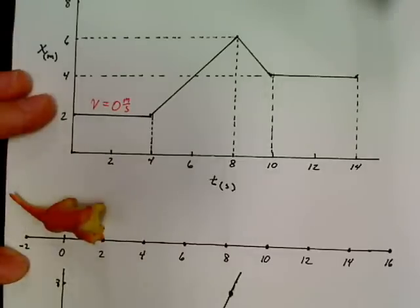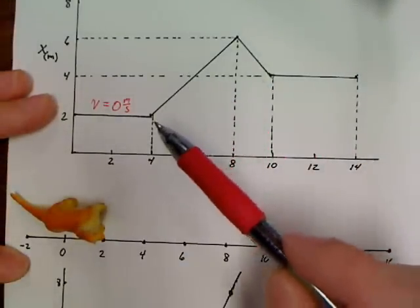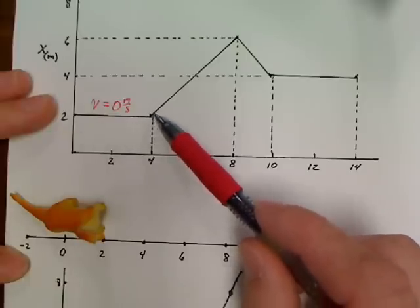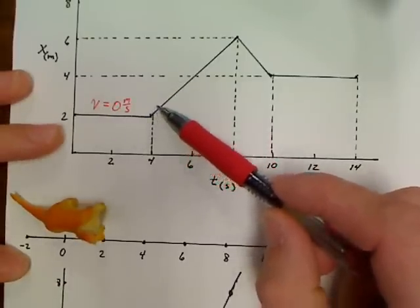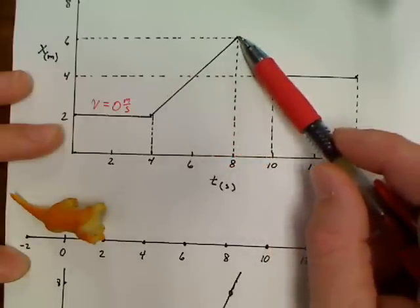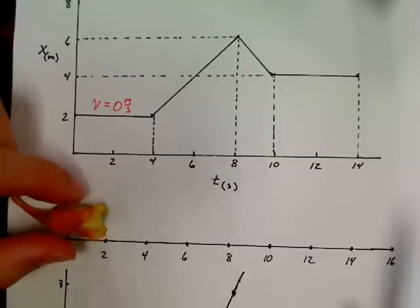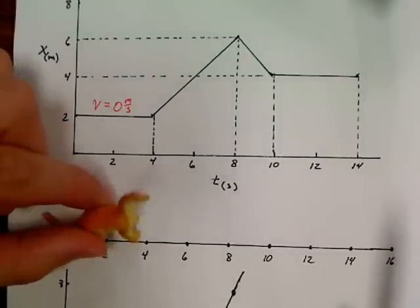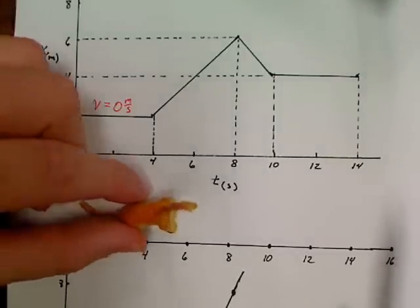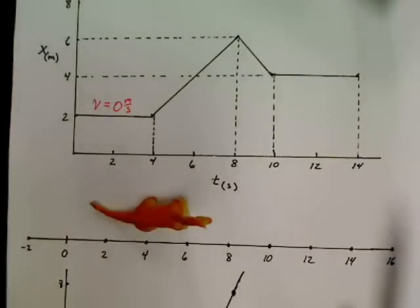Now take a look at what happens. After 4 seconds, the dinosaur begins to move. He moves from the 2-meter position to the 6-meter position. So after 4 seconds elapsed, the dinosaur begins to move, and at the 8-second mark, he's now 6 meters away.